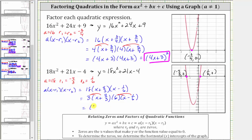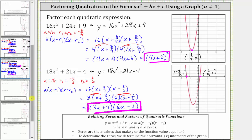Three times x is 3x, plus three times 4 thirds is 12 thirds or four, giving us 3x plus four. Then distributing the six: six times x is 6x, minus six times 1 sixth is one, giving us 6x minus one. We now have the common factored form of the given quadratic expression: the quantity 3x plus four times the quantity 6x minus one. I hope you found this helpful.